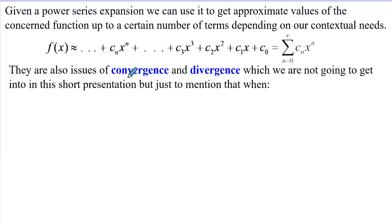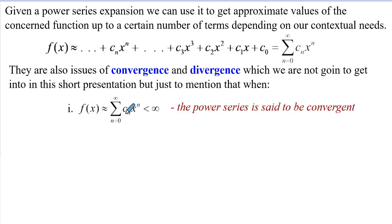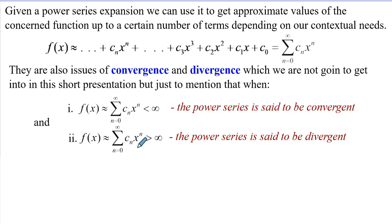There are also issues of convergence. When the power series expansion sums to less than infinity — meaning the infinite terms approximate a certain finite value — we say the series is convergent. On the other hand, when the series is greater than infinity, we say it is divergent.